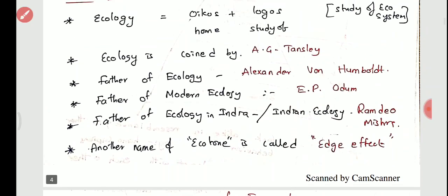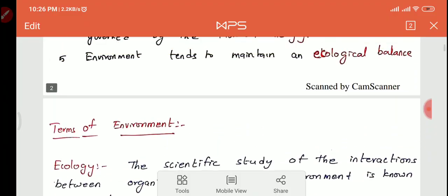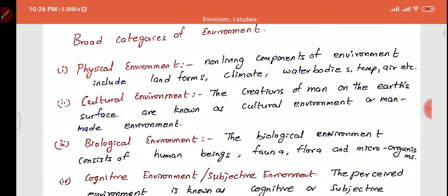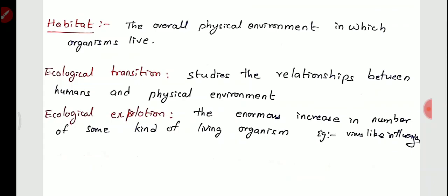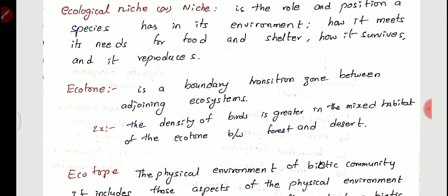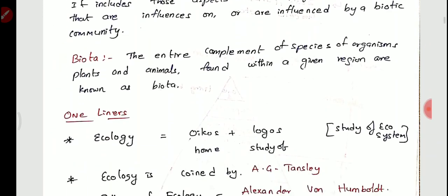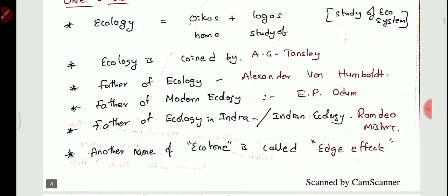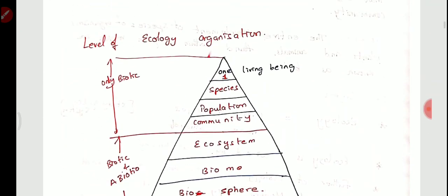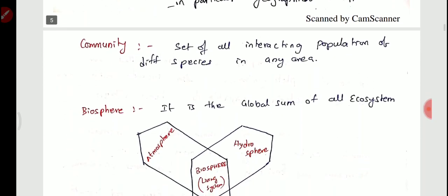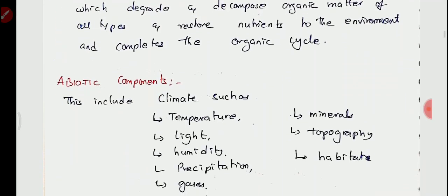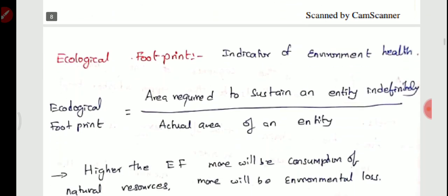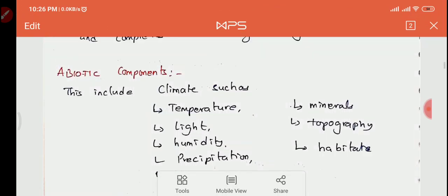We have now studied the definition and types of environment, the categories of environment, and the key terms: ecology, ecosystem, habitat, ecological transition, ecological explosion, ecological niche, ecotone, ecotope, and biota. In the next class, we will see the types of ecosystem, how energy flows in the ecosystem, and the biotic and abiotic components of an ecosystem.